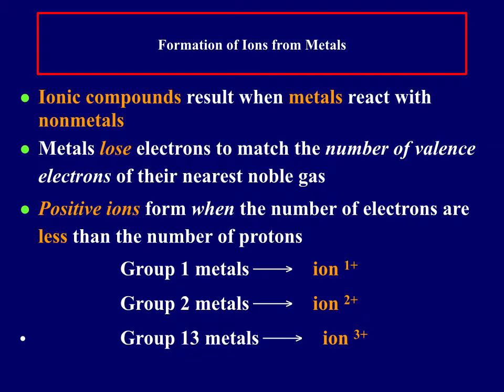So getting into the types of bonds, an ionic bond results when metals react with non-metals. So metals lose electrons to match the number of valence electrons to the nearest noble gas. So that will be the noble gas before. So neon is a noble gas, number 10, and sodium is number 11. Sodium will lose its 11th electron so that it will have the same amount as neon, for 10.